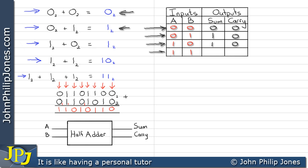The last combination is one plus one. That equals two, which cannot go in one column, so we have a sum of zero and a carry of one. We therefore place a sum of zero and a carry of one in the truth table. This completes the truth table for the half adder.